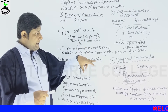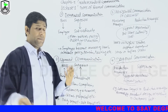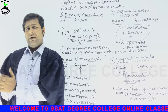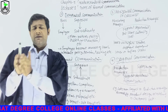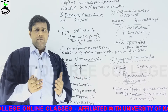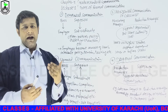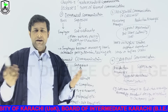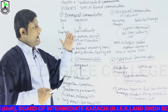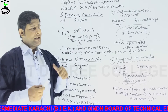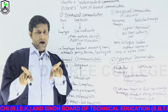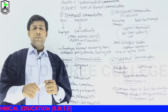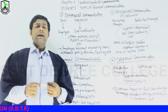Lower status people of one department communicate with lower status people of another department; higher status people of one department communicate with higher status people of another department. When they communicate with one another at the same rank, they share ideas freely and convey proposals, memos, summaries, and presentations. Crosswise communication means two persons of different departments having the same authority level communicate for the benefit of their organization. That is called horizontal or crosswise communication.